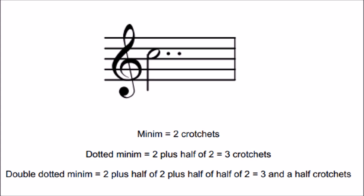A double dotted minim is worth 2 plus half of 2, plus half of the half of 2, which equals 3 and a half crotchets, and looks like this.